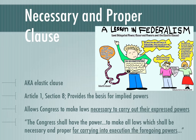This is a quote from Article I, Section 8 — the last lines of that article: 'The Congress shall have the power to make all laws which shall be necessary and proper for carrying into execution the foregoing powers.' The word 'foregoing' means preceding — the ones that came before. In practice, this allows Congress to make laws they feel are necessary for carrying out their expressed powers.